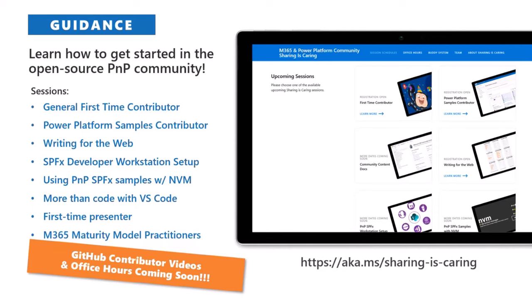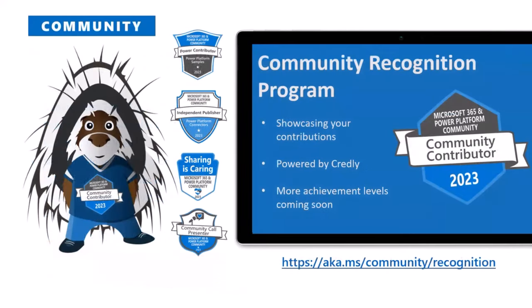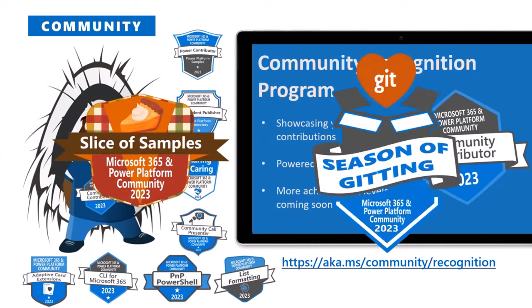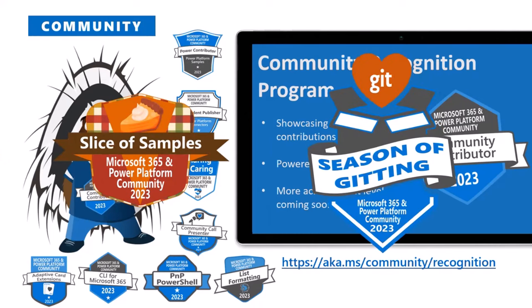Once you submit, we want to recognize you. Our community recognition program powered by Credly is showcasing all your contributions. Sample badges are getting shared on LinkedIn and Twitter. The seasonal badges are available for the next couple of months — all you have to do is submit or modify a sample or submit a contribution. We're also getting new badges set up for 2024. I'll give you a hint: Sebastian Levert and I were talking, and we're getting an MGT badge — Microsoft Graph Toolkit — coming soon to a community near you.